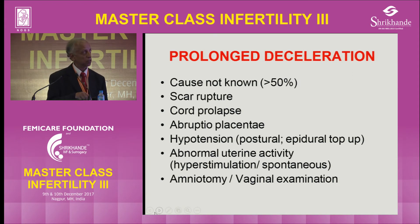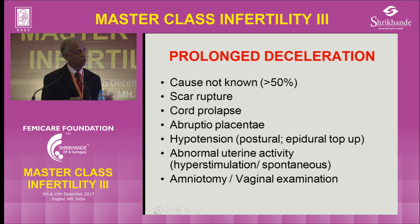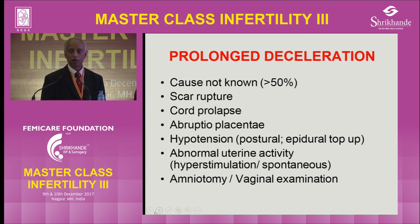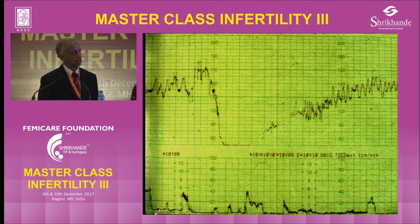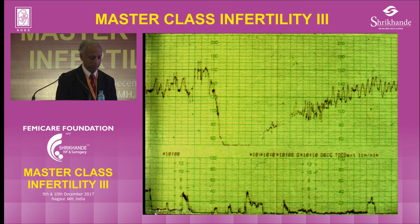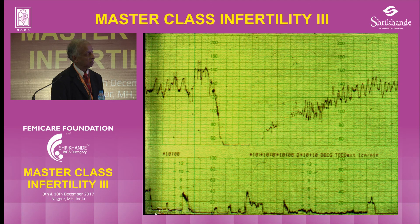There are reversible causes for prolonged bradycardia: maternal hypotension due to epidural top-up, abnormal uterine activity or hyperstimulation, and amniotomy or vaginal examination, which can stimulate uterine contraction. These are reversible — put the mother on her side and it should be okay. When you see a prolonged bradycardia, the first thing to do is exclude scar rupture, abruption, and cord prolapse. After that, you have time to manage conservatively. The second step is to look at the CTG trace and see whether it was reactive at the beginning — because if the trace was not reactive at the beginning, the baby may already be hypoxic.